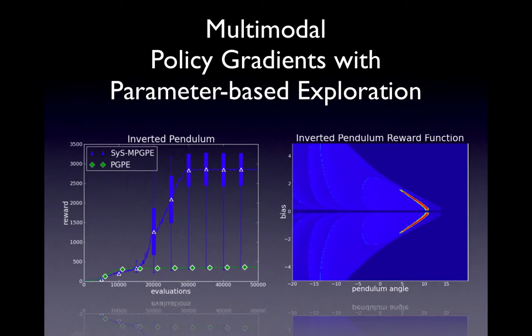We see on the right the reward landscape of a harder version of the inverted pendulum benchmark. In the inverted pendulum benchmark the task is to swing up a pole with an underpowered motor and balance it in the top position. The standard task requires the agent to swing once to gain momentum and then swing the pole up and balance it. We have used the task with an even more underpowered motor so that the agent needs to swing three times to gain momentum before swinging up and balancing the pole. As one can see, the global structure of the search space leads over several local optima to the left, while the global optimum is a very narrow band on the right.